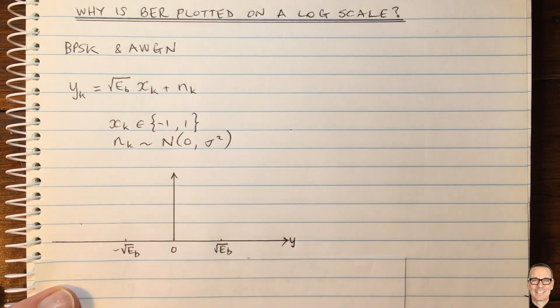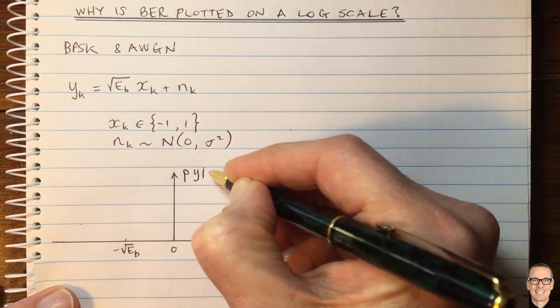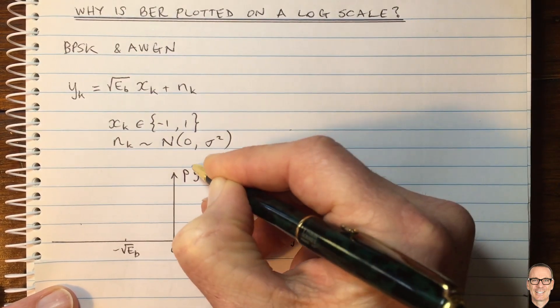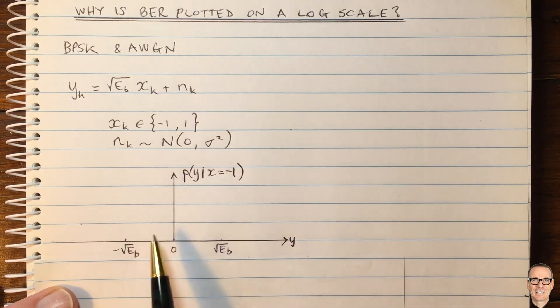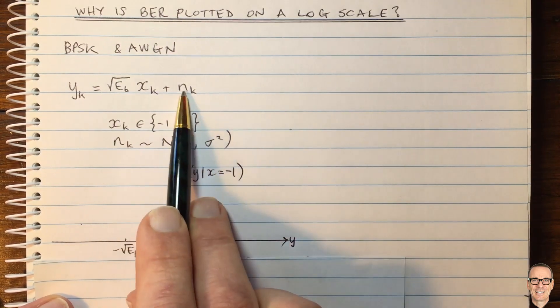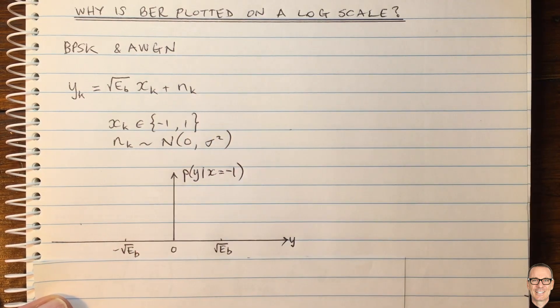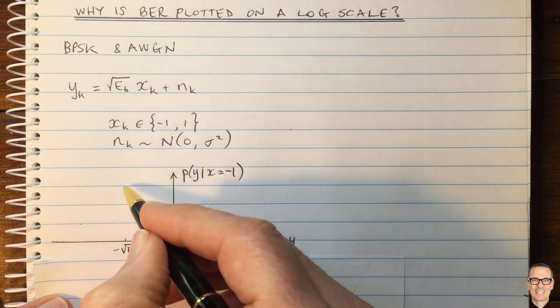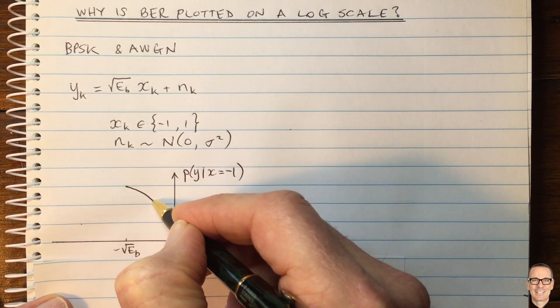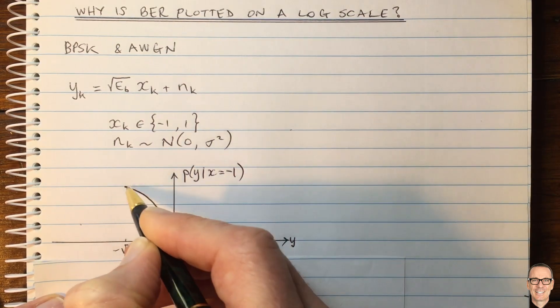If on this axis, we're going to plot the probability of getting that value y, given that x equals minus one. Let's just look at that one for an example. So let's say x was sent here, the energy would be here, but then you're going to be receiving it with Gaussian noise. So this probability density function will be a Gaussian centered at negative Eb and having the typical Gaussian shape that looks like this.